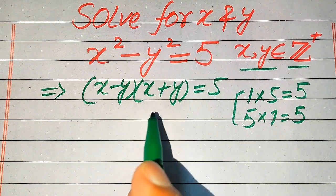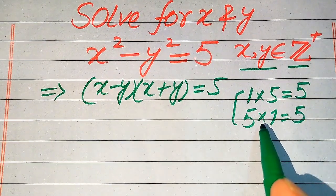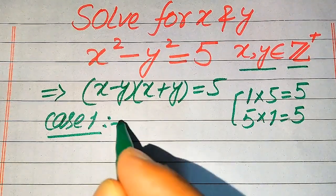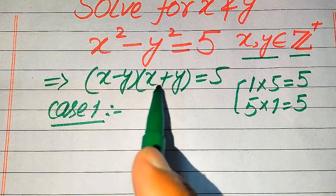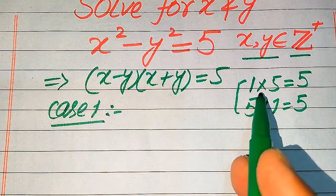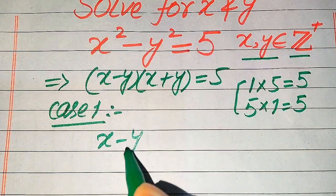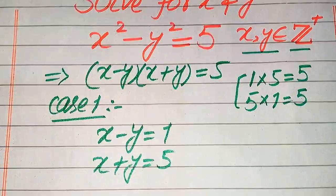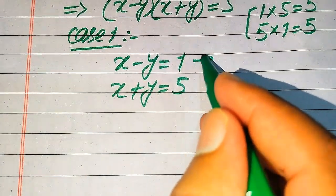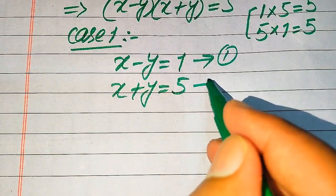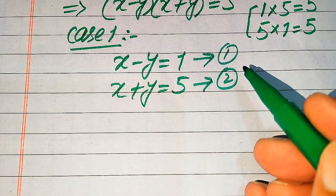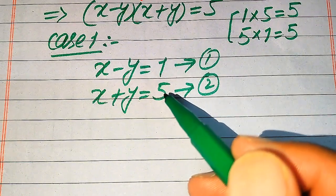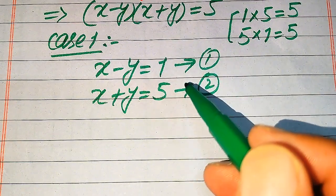We now convert the given question into two cases. In Case 1, we compare the two factors with these two values. After comparing, we get x minus y equals 1 (equation 1) and x plus y equals 5 (equation 2). We will find the values of x and y by solving these two equations.